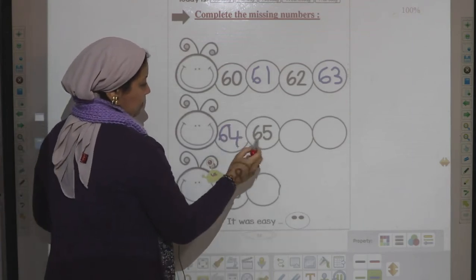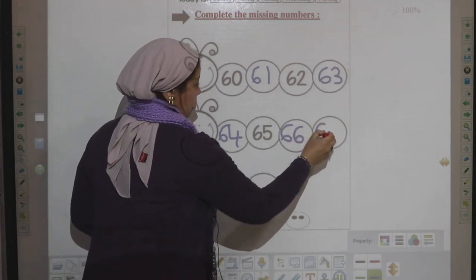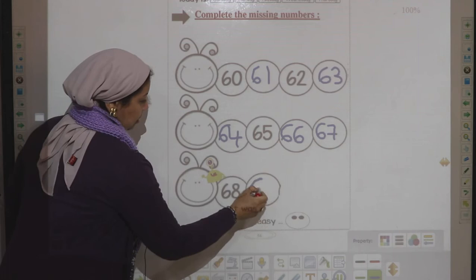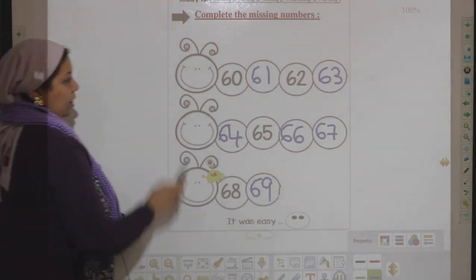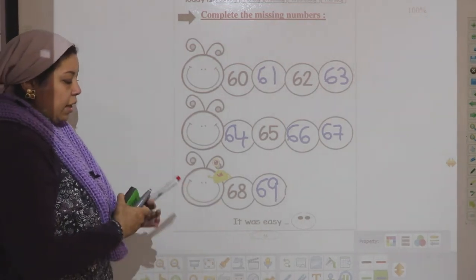65, 66, 67, 68. And the last circle, we're going to write 69. And these are the numbers from 60 to 69.